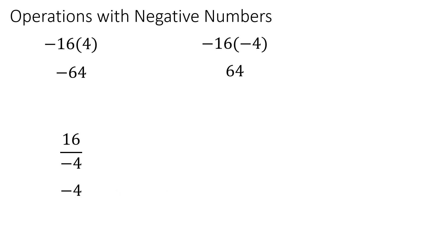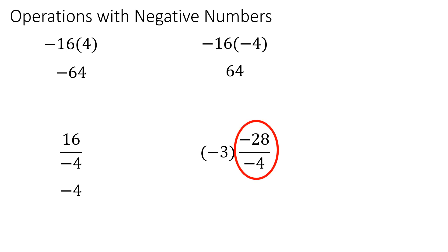If you have three different things going on — for example, negative 3 times negative 28 over negative 4 — you can simplify the fraction by dividing first. Negative 28 divided by negative 4: two negatives make a positive, so that becomes positive 7. Then you have negative 3 times 7, which is negative 21.